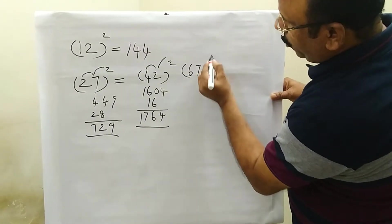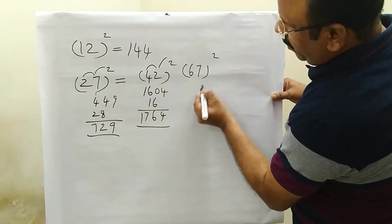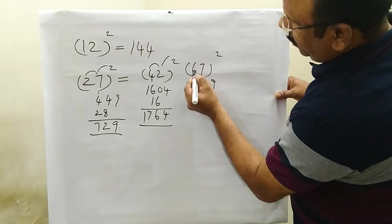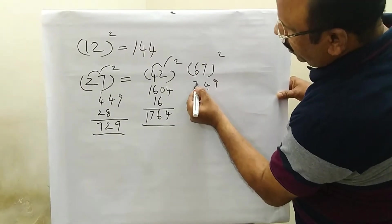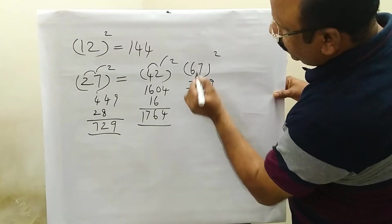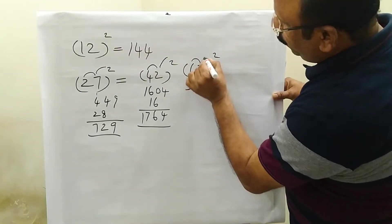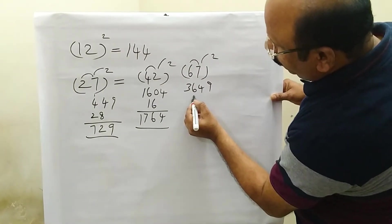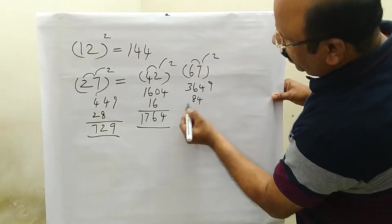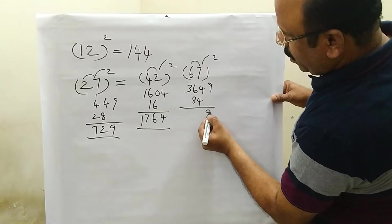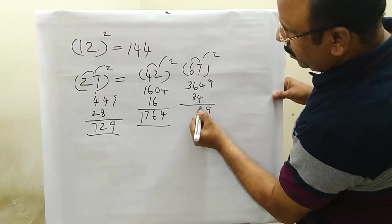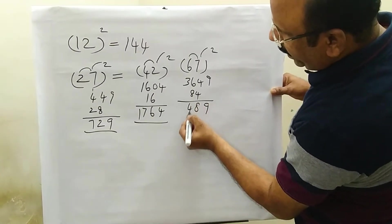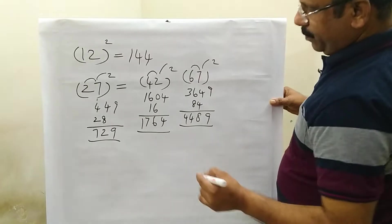67 squared: 7, 7 gives 49. 6, 6 gives 36. 6 times 7 is 42; 42 into 2 is 84. One digit is right here — 84. Then 9, 8 plus 6 is 14, carry 1 remaining. 4, 4 — answer is right here.